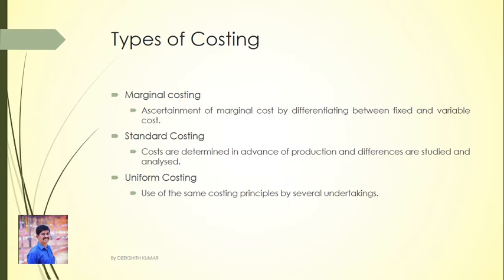Next is Standard costing. It is a type of costing where costs are determined in advance of production. The difference between the actual cost and the standard costs is collected and analyzed. That is called standard costing.